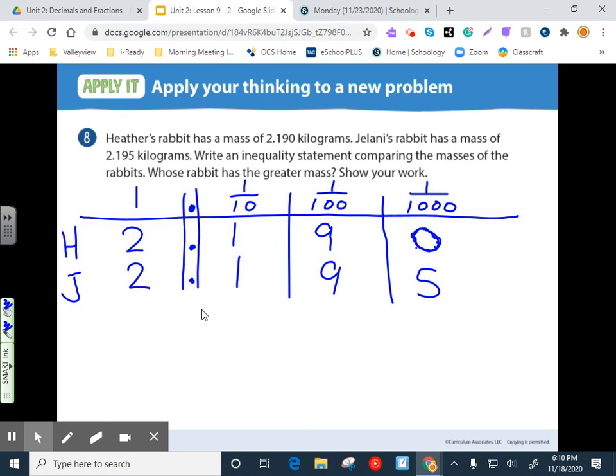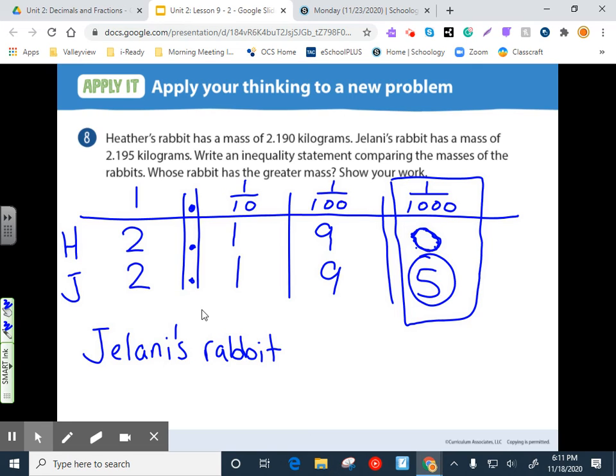Because the ones column, tenths, and hundreds all match up. It's when we get to this one where we've got a difference. Five is greater than a zero. So Jelani's rabbit is the bigger of the two. And to write an inequality statement to show that, we can show 2.195 is greater than 2.19. And last but not least, question nine.